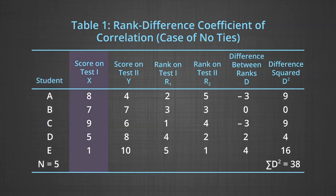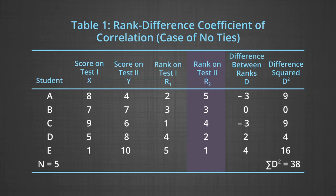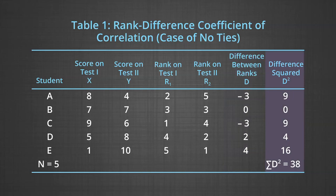The first column shows the serial number of students. The second column shows scores on Test 1, and the third column shows scores on Test 2. In the fourth column, ranks have been allotted to students on Test 1, and in column five, ranks have been allotted on Test 2. These ranks go from one to five, with the highest score getting rank one and the lowest score getting rank five. In column six, the difference between ranks is calculated, denoted as D. Each difference has been squared and summed in column seven, giving us the sum of D squared, which equals 38.